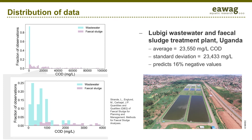Another important point to consider is that fecal sludge characteristics do not follow a normal distribution. This data shows influent values at the Lubigi wastewater and fecal sludge treatment facility during 2014. The blue bars show wastewater and the purple fecal sludge. Fecal sludge has much greater concentrations and follows a different distribution. The average COD and the standard deviation for fecal sludge are basically the same, meaning that if you used a normal distribution, 16% of the time the COD value would be negative, which does not make sense. You cannot make assumptions about expected average values. At a minimum, we recommend using median and 1st and 3rd quartile values and reporting all of your raw data.